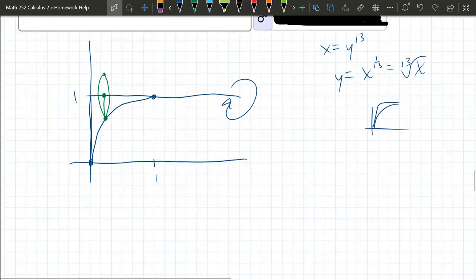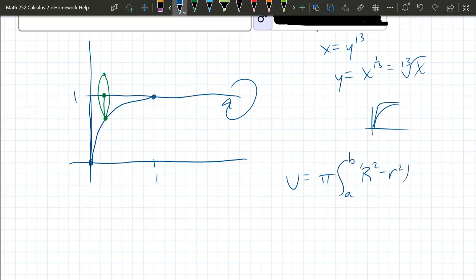And let's go ahead and write down the integral formula. Volume equals pi integral a to b, big R squared minus little r squared. We are going to have a dx because we got to change our x coordinate to cover our entire region.